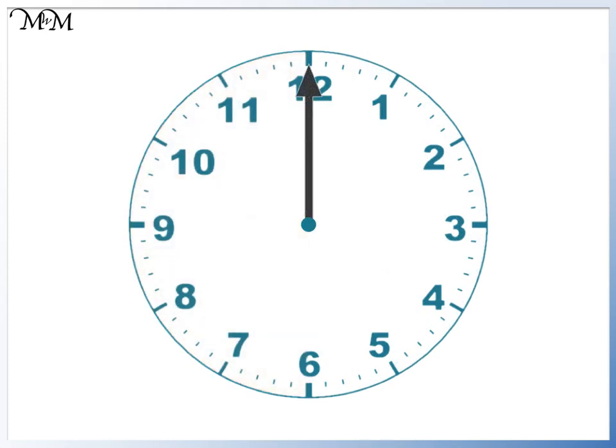The minute hand tells us how many minutes have passed. At 12, 0 minutes have passed. We can also think of it as how many minutes need to pass until we reach the next hour. At this point, it is 1 minute to the next hour.